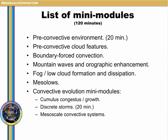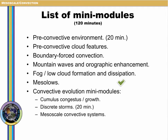The modules include pre-convective environment, pre-convective cloud features, boundary-forced convection, mountain waves and orographic enhancement, fog and low cloud formation and dissipation, mesolows, and also a series on convective evolution including cumulus, congestus and growth, discrete storms, and mesoscale convective systems.